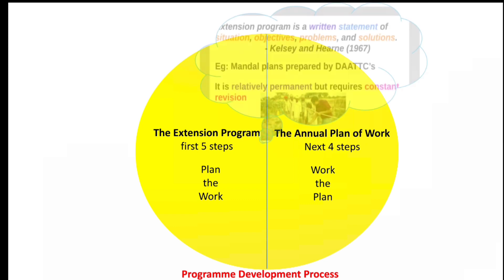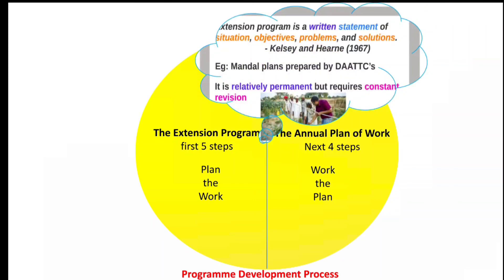We can recall the example of an extension program — that is, wonder plans prepared by DART centers. From our earlier discussion, those well-prepared plans are planned once and executed every year, year after year, with some required changes.